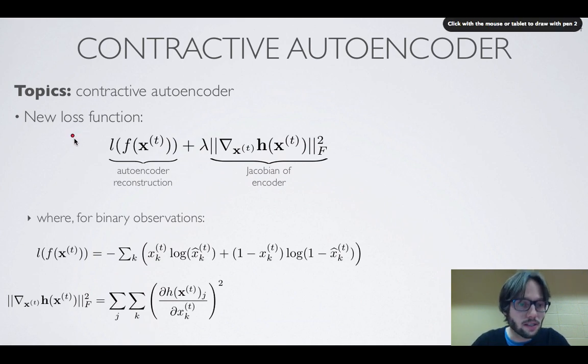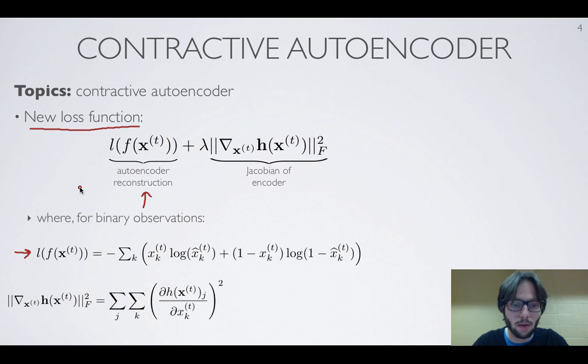So the way we'll do this is design this new loss function, where in addition to the reconstruction error from the autoencoder, such as this one for binary observations, the cross-entropy one, we'll add this term, which is going to be weighted by some hyperparameter lambda.